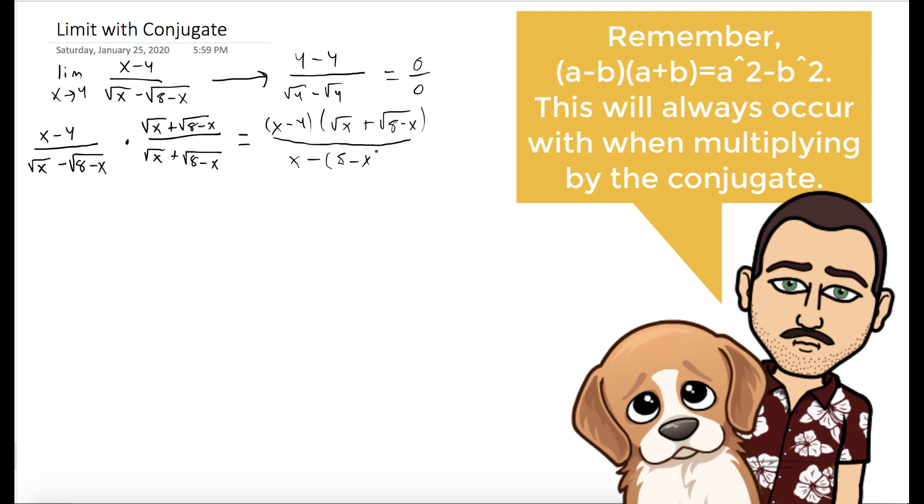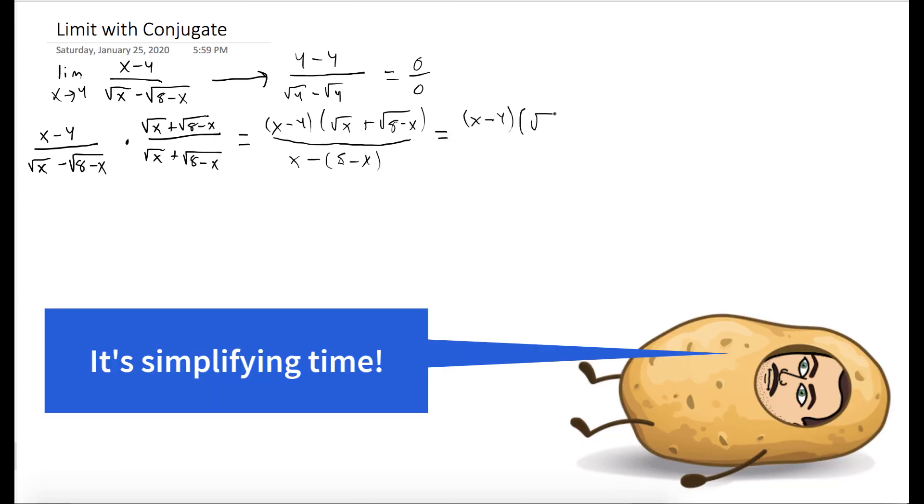We're not going to simplify our numerator, but our denominator becomes x minus the quantity 8 minus x, which we could simplify to 2x minus 8.